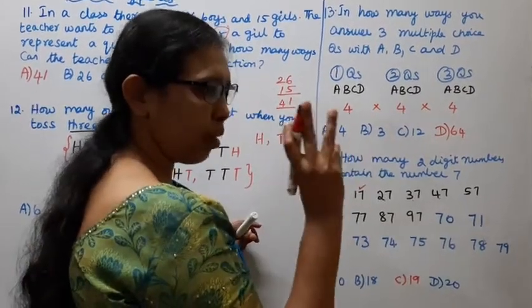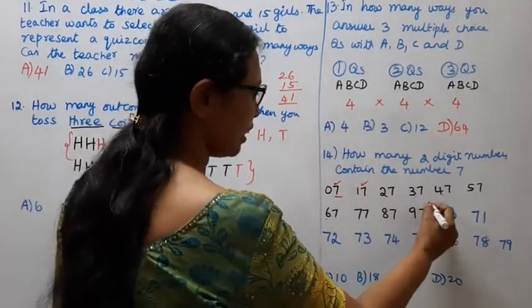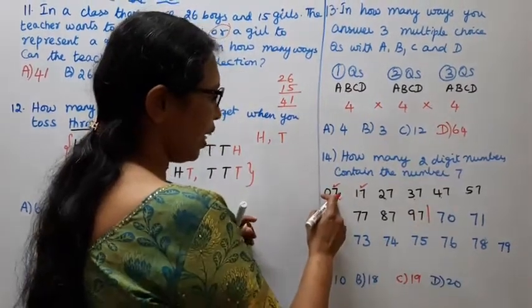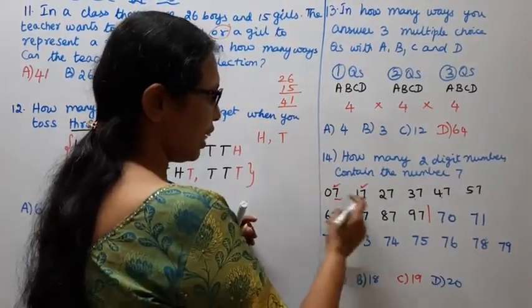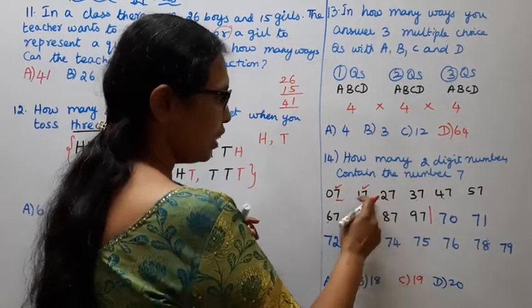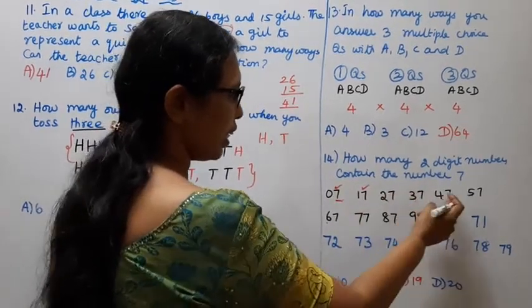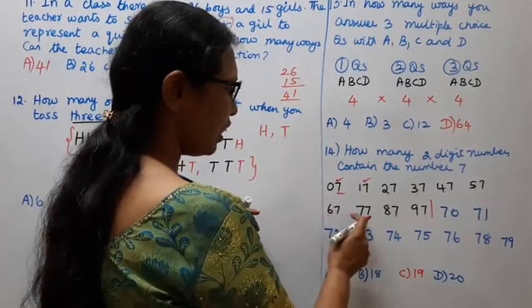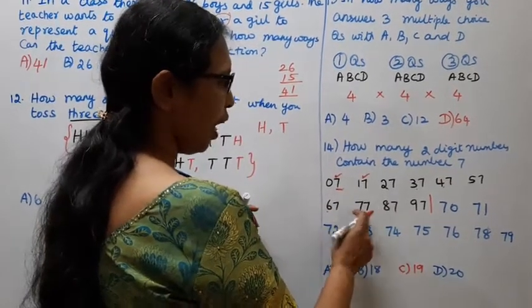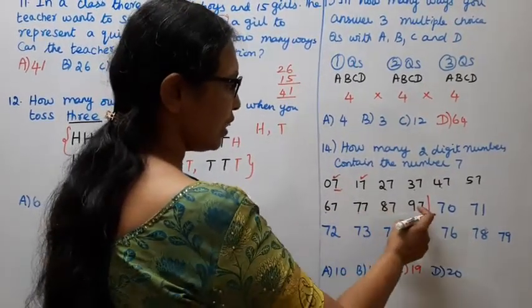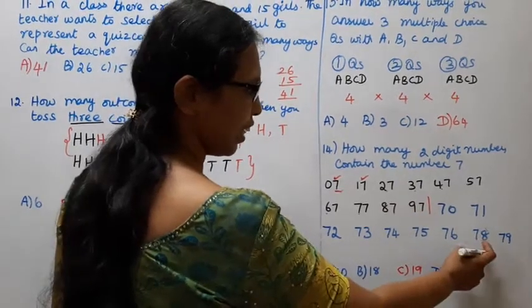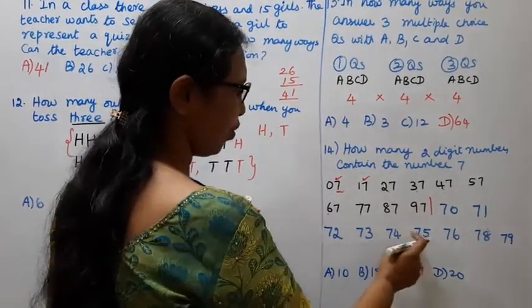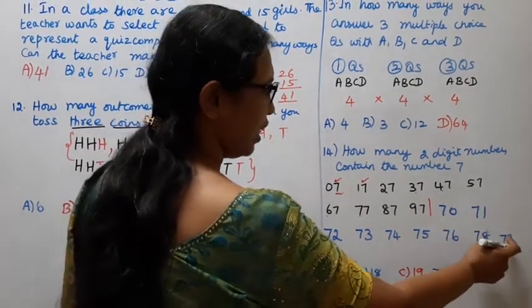The 2-digit numbers containing 7 are: 70, 71, 72, 73, 74, 75, 76, 77, 78, 79 (7 in the tens place), and 17, 27, 37, 47, 57, 67, 87, 97 (7 in the units place).